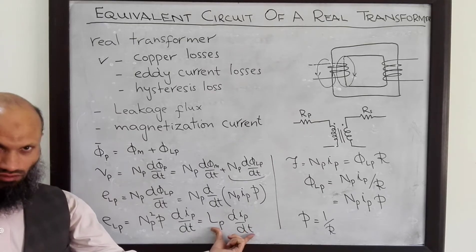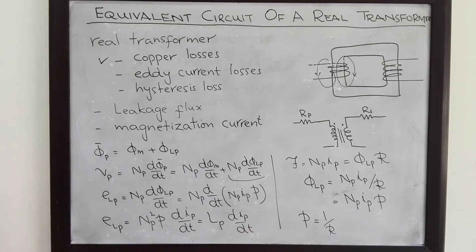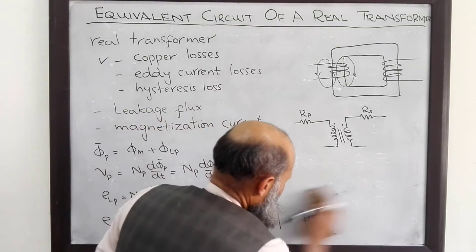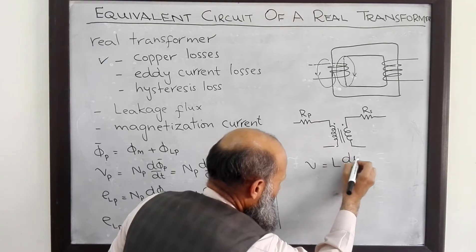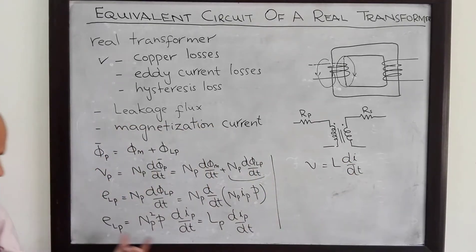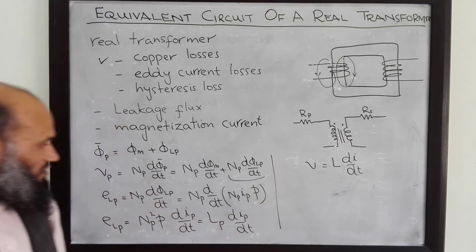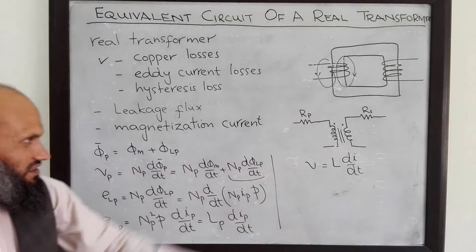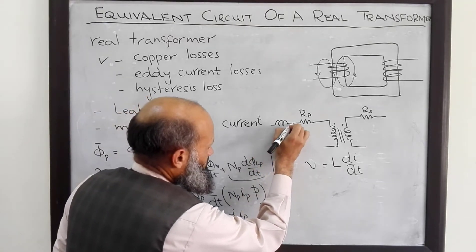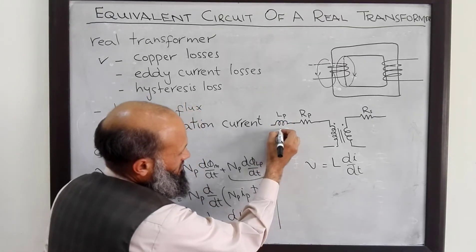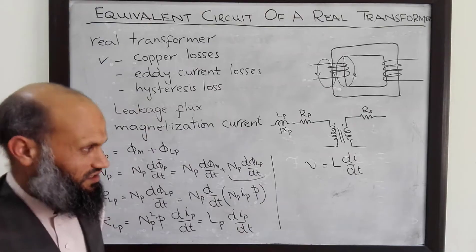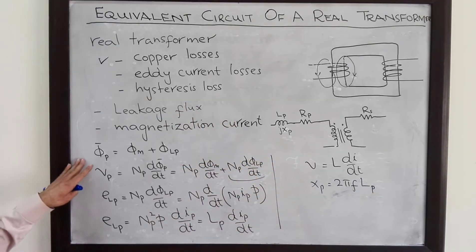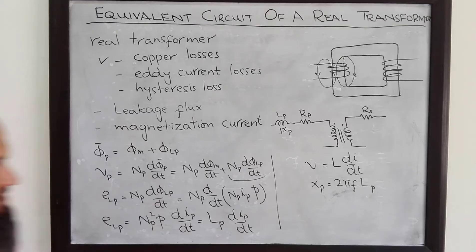This expression, Elp = Lp·(dIp/dt), is similar to the voltage across an inductor, V = L·(dI/dt). Therefore, the effect of leakage flux on the primary side can be incorporated into the equivalent electrical circuit by appending an inductor Lp in series, with inductive reactance jXp, where Xp = 2πf·Lp. Similarly, on the secondary side, the total flux linking with the secondary winding also consists of two parts — mutual flux and secondary leakage flux — and the same treatment applies.